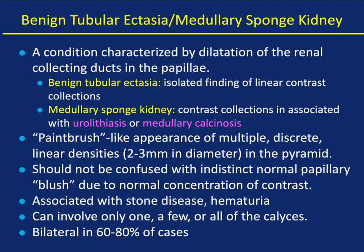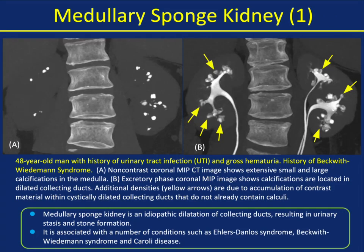Here's a patient with medullary sponge kidney presenting with gross hematuria. The non-contrast coronal MIP images show extensive small and large calcifications in the medulla. The excretory phase coronal MIP shows calcifications located in the dilated collecting ducts. Additional densities are due to accumulation of contrast material within cystically dilated collecting ducts that do not already contain calculi. You can see it's a combination of calyces with and without calculi, but that paintbrush appearance is indeed very impressive.